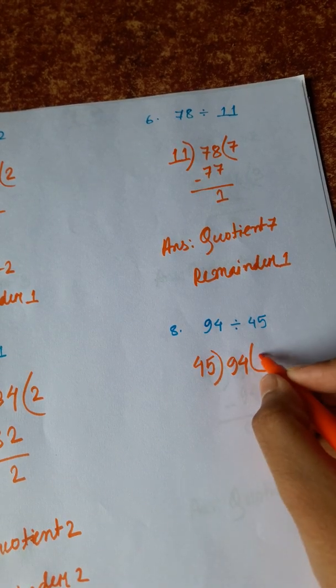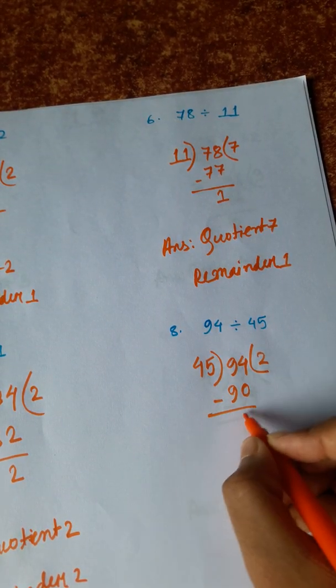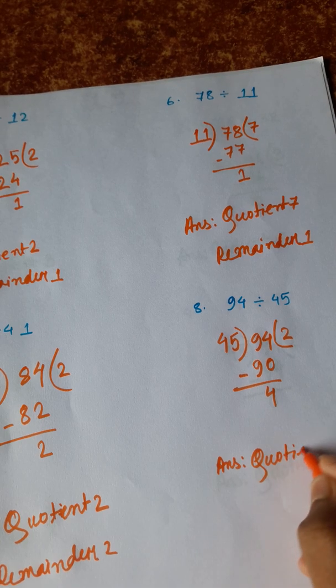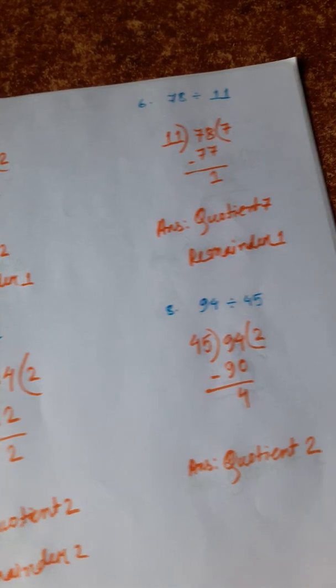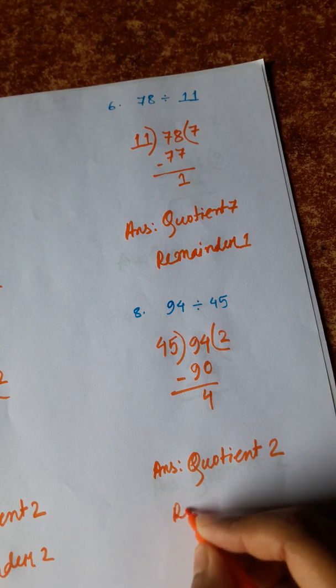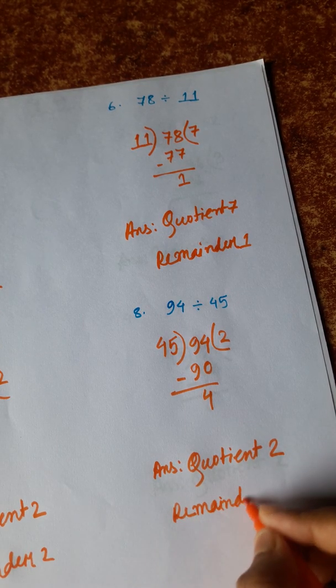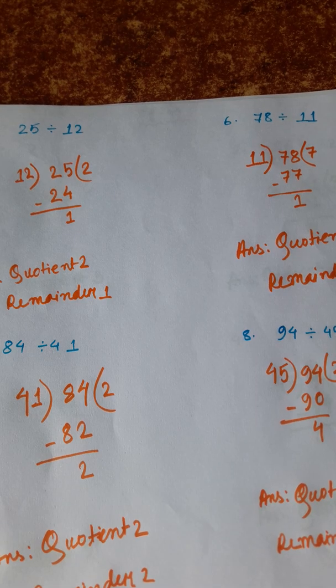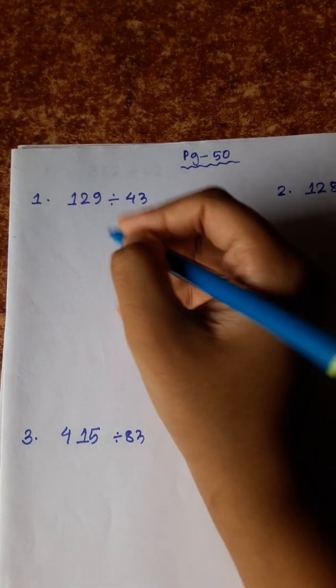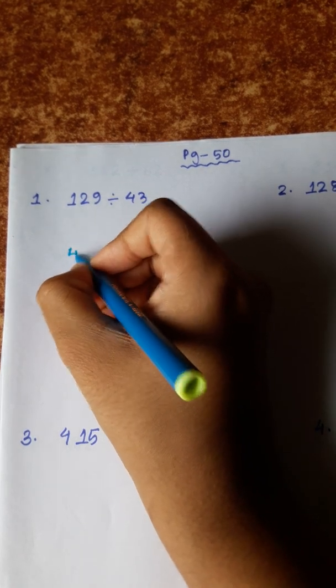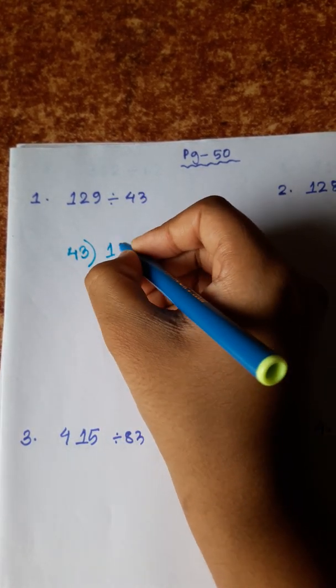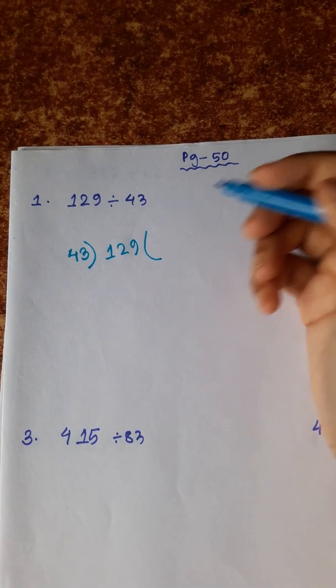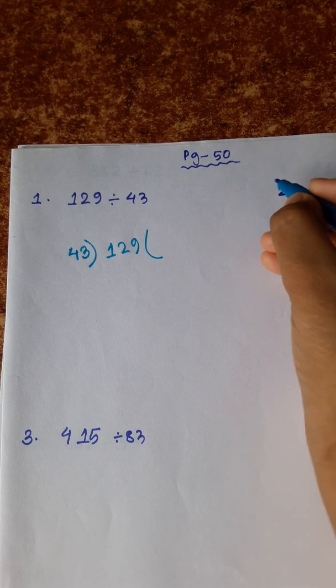45 twos are 90. 129 divided by 43. 43 ones are 43, 43 twos are 86, 43 threes are 129.